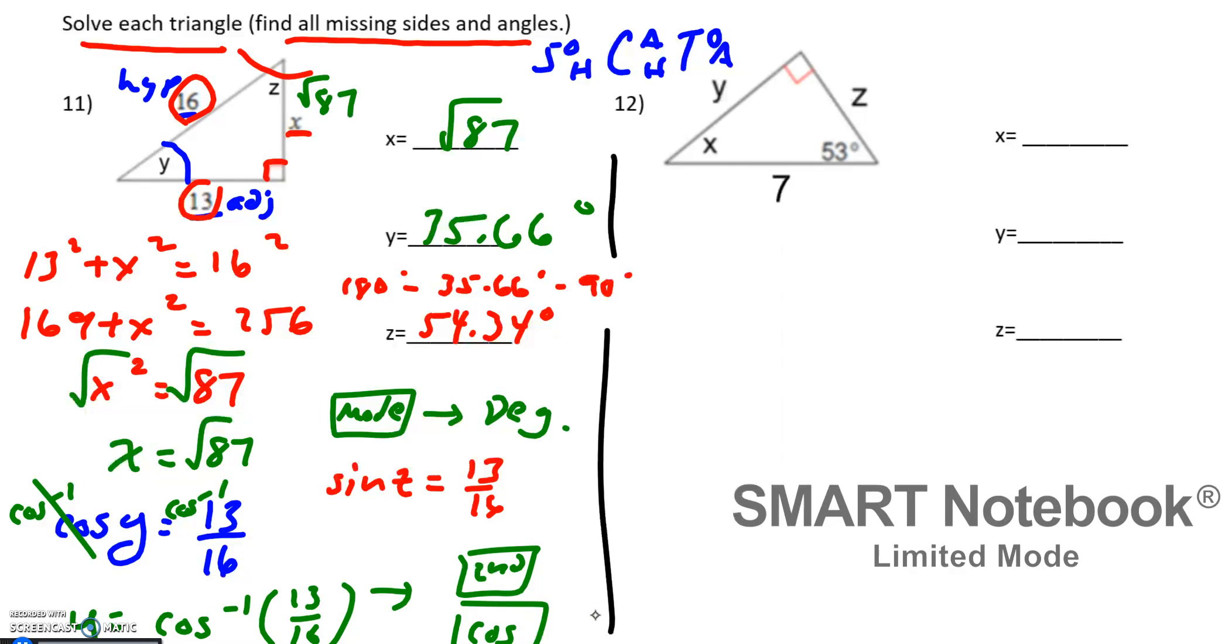If I looked at number 12, this time I'm given, I don't have two sides and I do have one angle. Again, I will go alphabetically. I know that a triangle is always 180 degrees. So to find x, I could just do 180 minus 90 minus 53 and get the remaining x value, which would be 37 degrees. So we're done with x.